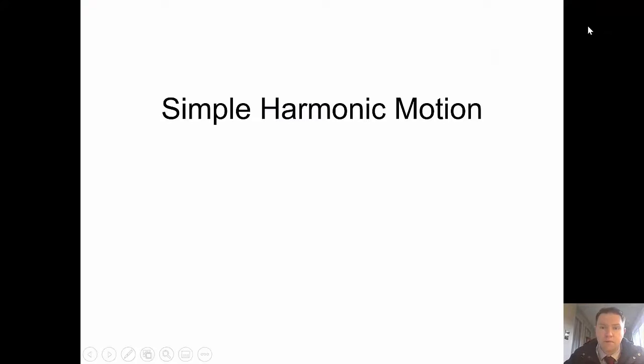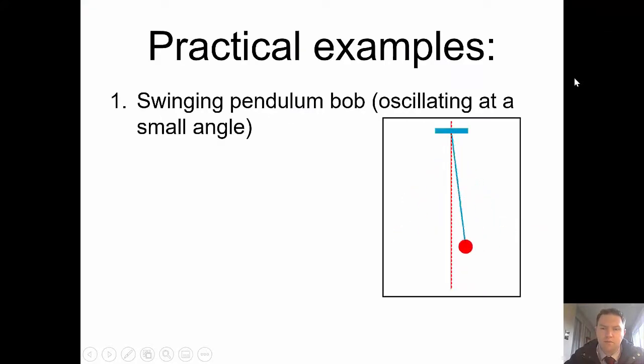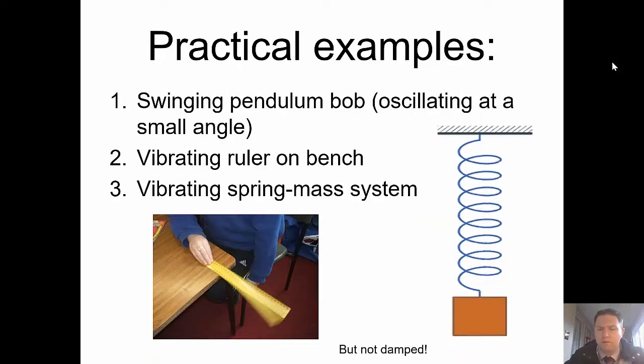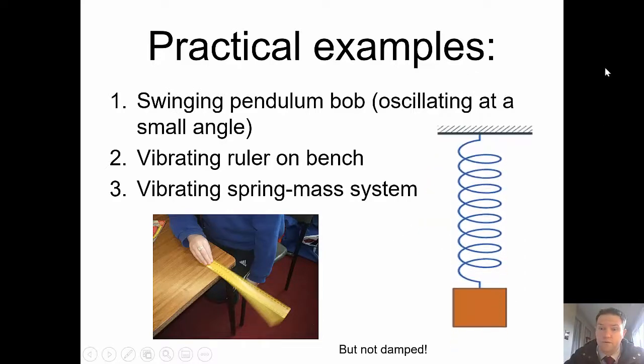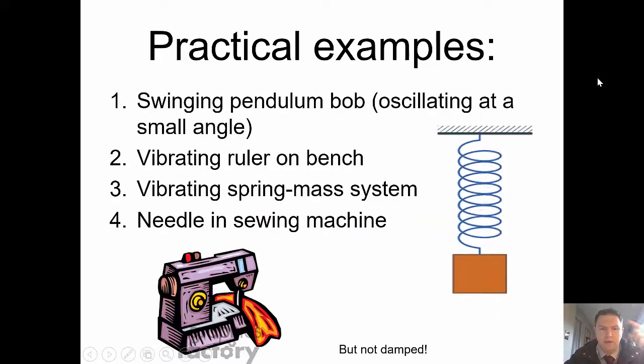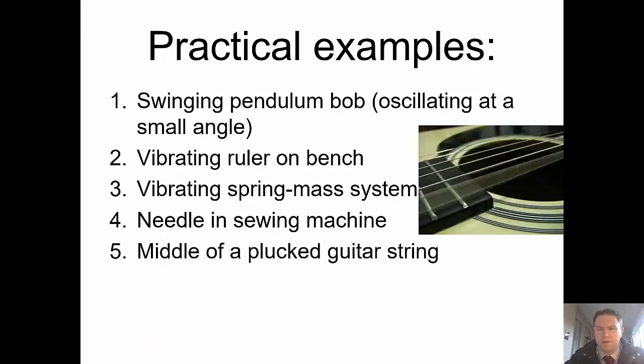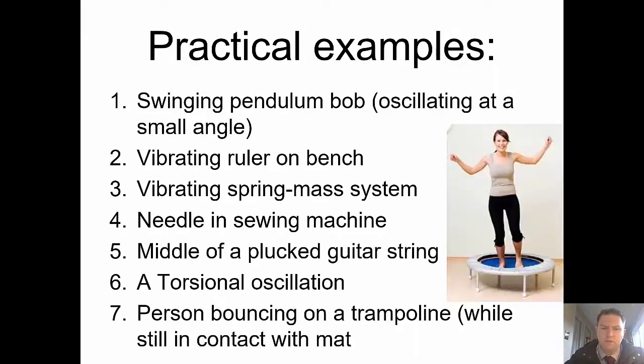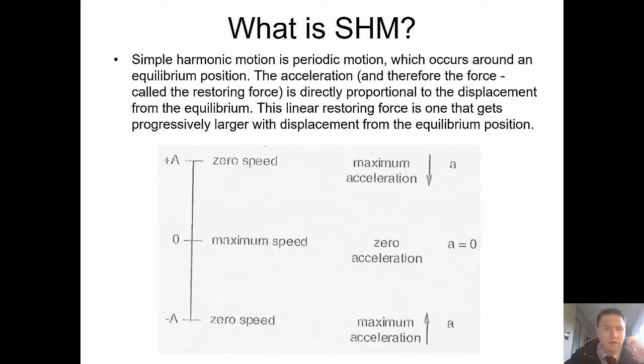To define what simple harmonic motion is, it might be easier just to go over a few examples. So a pendulum, a ruler vibrating on a bench, a spring, a needle in a sewing machine, a string on a guitar, a torsional pendulum, bouncing on a trampoline while still in contact. What have they all got together?